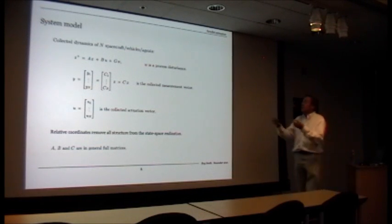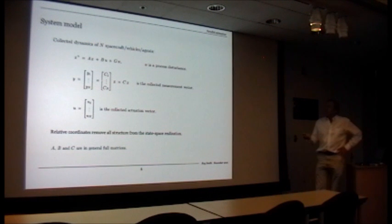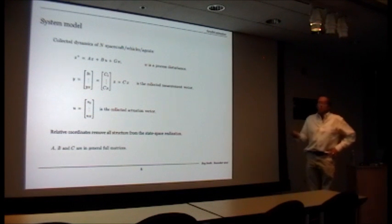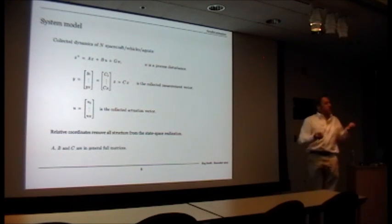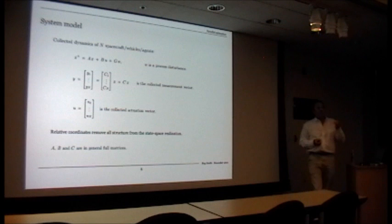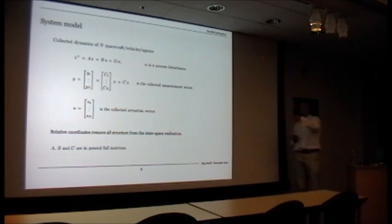We have vehicles or agents with N decision makers trying to coordinate their control. I've got a model here in the state space form with a disturbance input, and I have a collection of measurements. Each spacecraft gets to measure some things. In this problem, those measurements are the relative positions to some other spacecraft, not necessarily all of them.